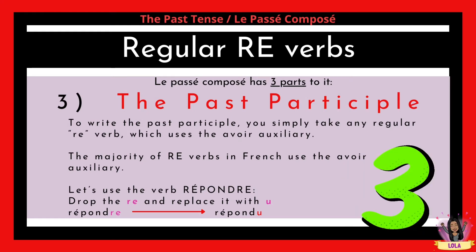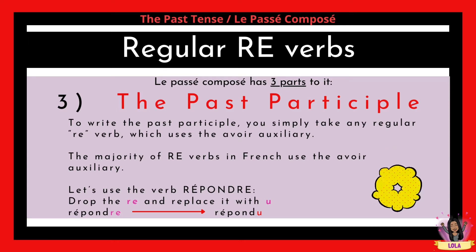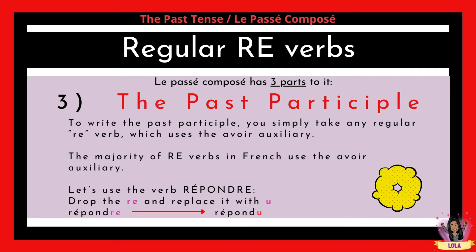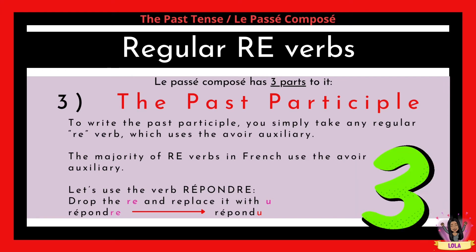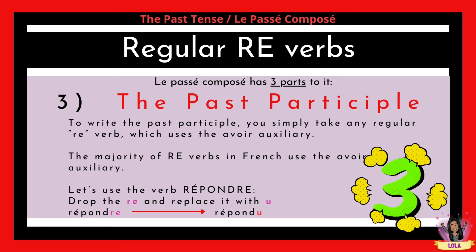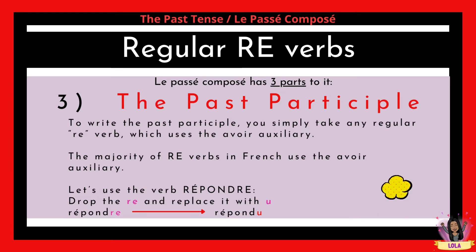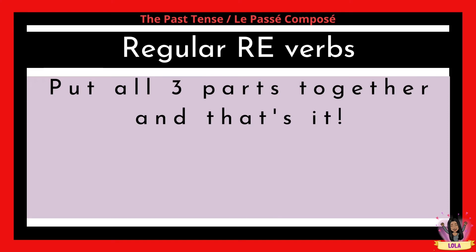The third part is the past participle. To form the past participle, you simply take any regular RE verb — the majority of RE verbs in French use the avoir auxiliary. Let's use the verb répondre as an example: we drop the RE at the end and replace it with U, so répondre becomes répondu.